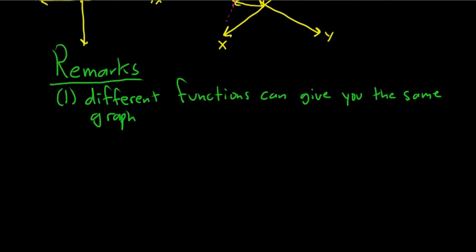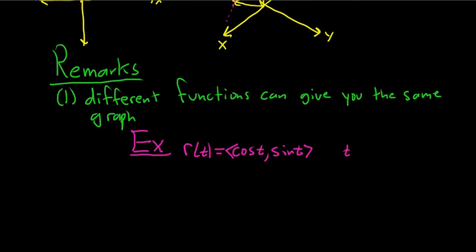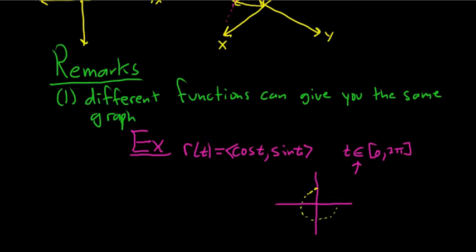Here's a key example. Say we have r(t) = ⟨cos t, sin t⟩ where t is in [0, 2π]. If you remember some trig, this gives you the entire unit circle — the endpoints of all the vectors trace out the unit circle. Each vector in this case has magnitude 1, because the circle has radius 1, so the length of the vector equals the radius of the circle.